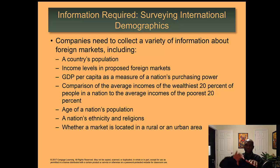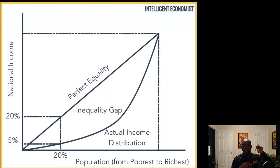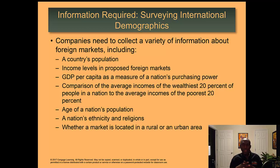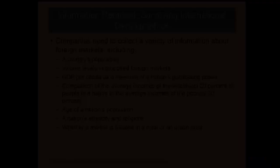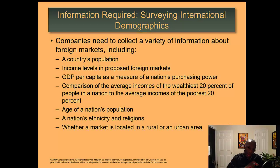In graduate school, they use a Lorenz curve, which plots percentage of income versus percentage of population. Perfect equity would mean 1% of the population controls 1% of income, 50% controls 50%, and so on. But typically, in many countries, the top 5% may control 50% to 60% of the nation's wealth — as you find in the US, where the top 1% controls a very large share of national income.